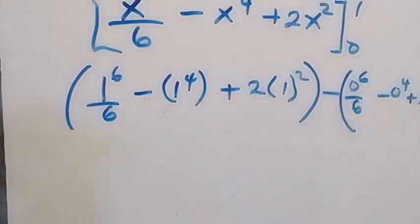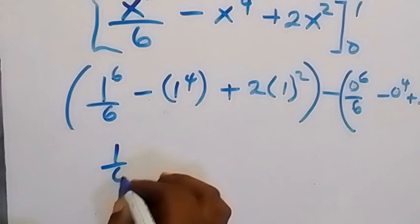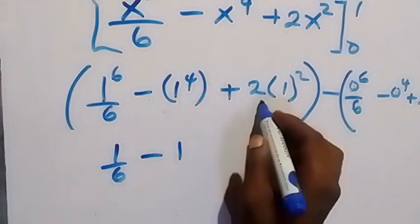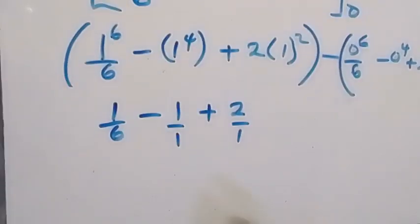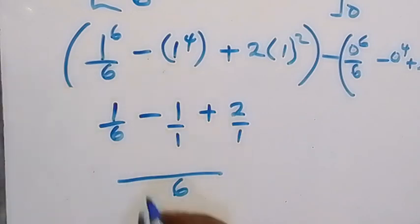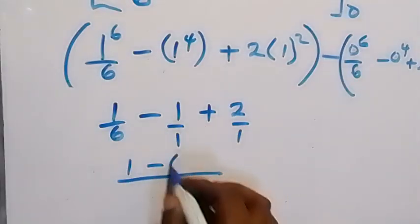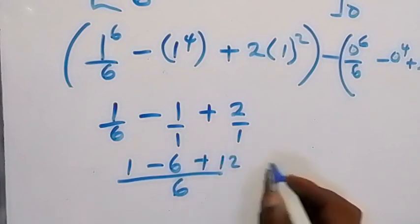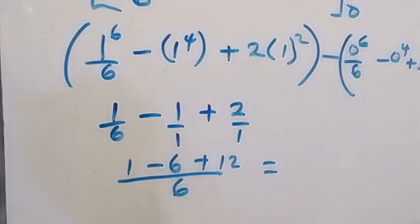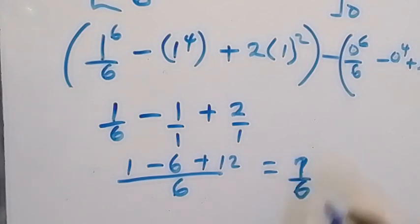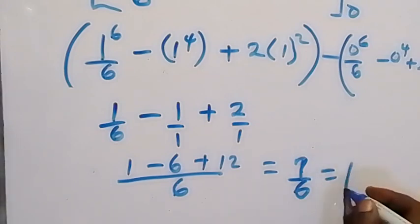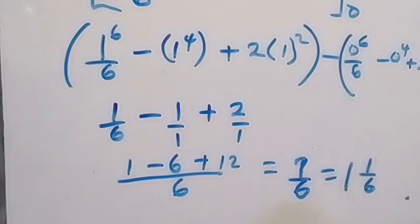So now we have 1 to the power 6 which is 1, giving 1 over 6. Then minus 1, then plus 2. Bringing it together with LCM of 6: we get 1 minus 6 plus 12 over 6, which is 1 minus 6 equals minus 5, plus 12 equals 7. So we get 7 over 6, which is 1 and 1 over 6.